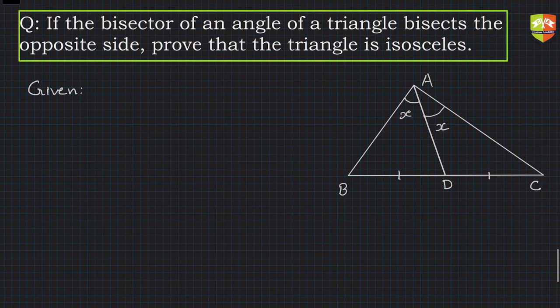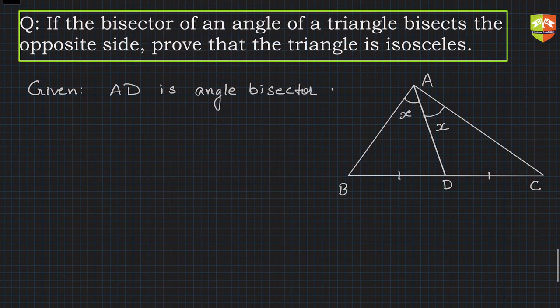So let's write given. What is given? AD is angle bisector of angle BAC. This is given number one.